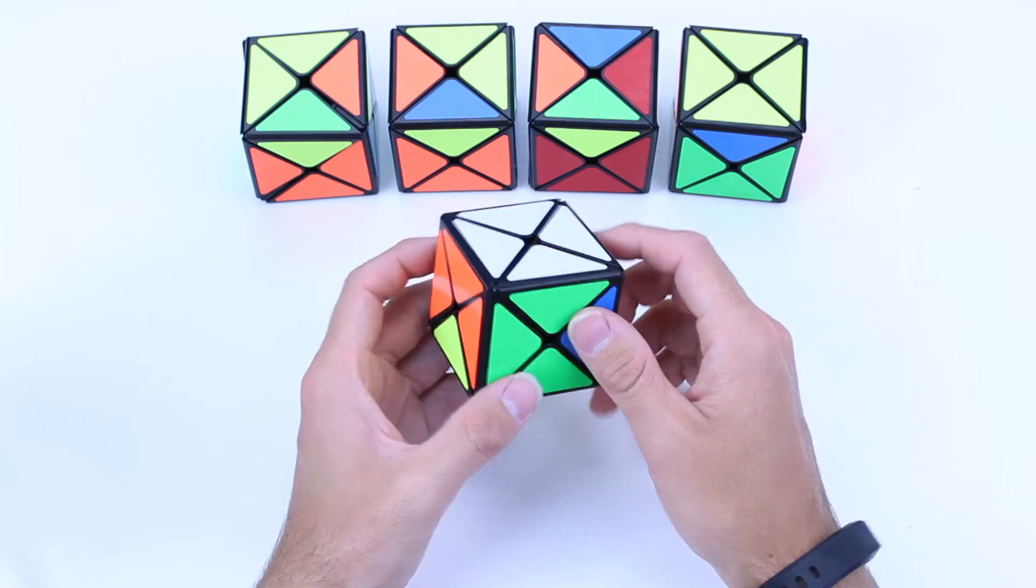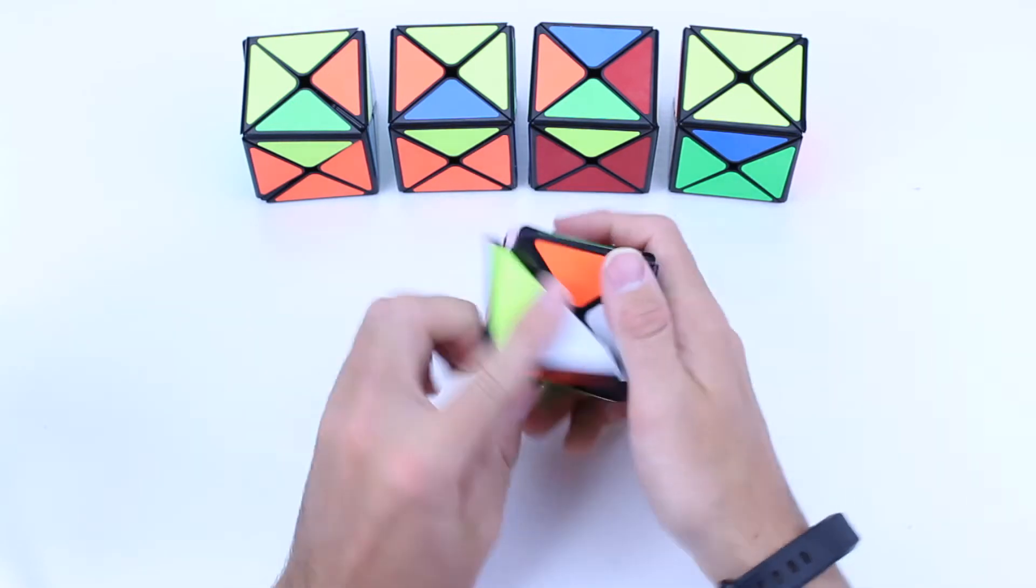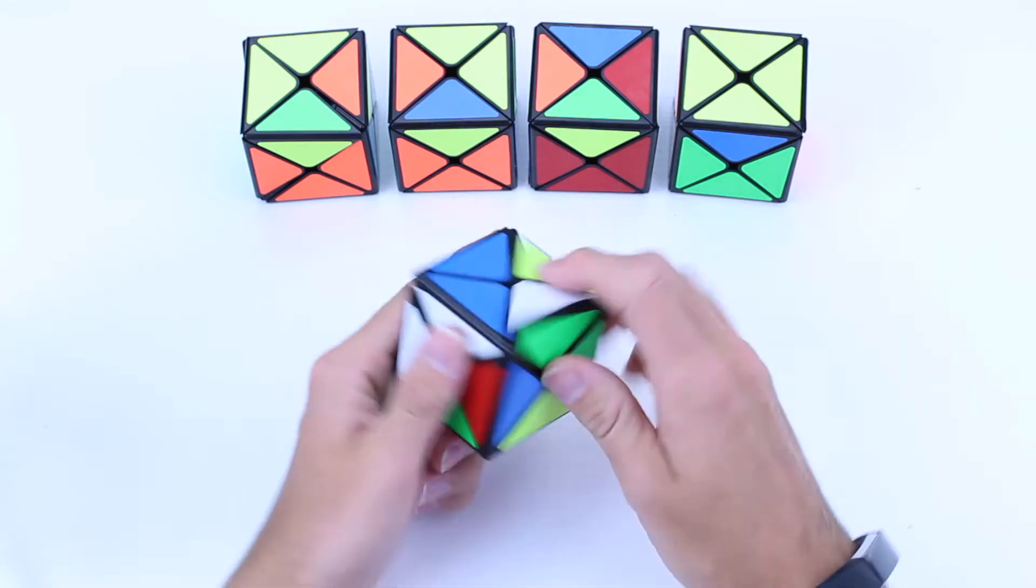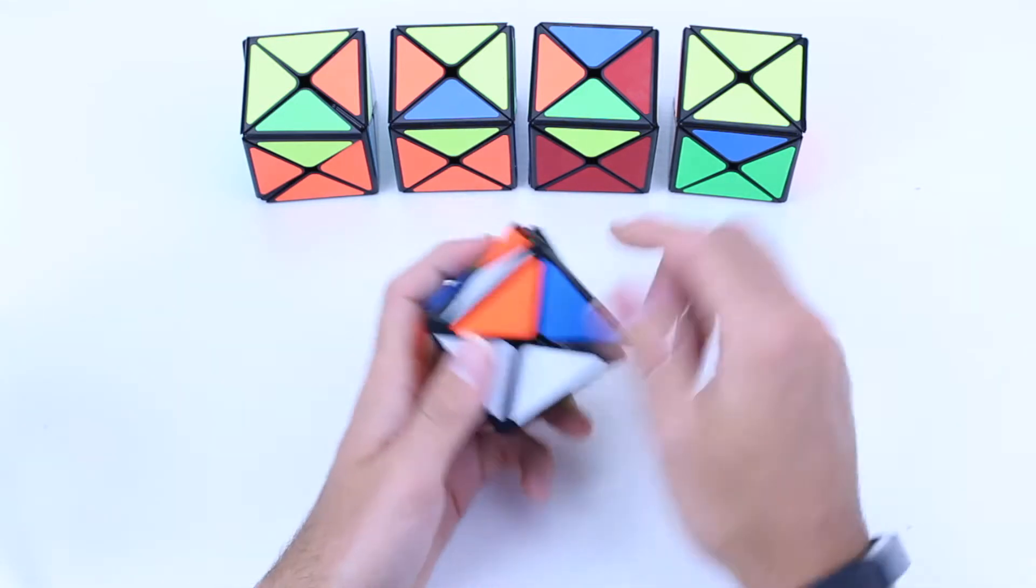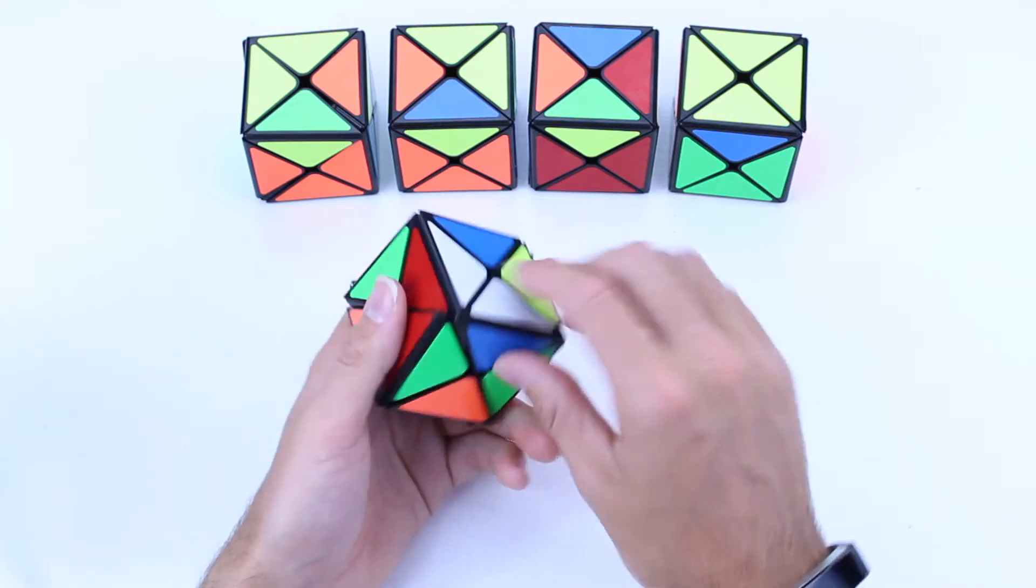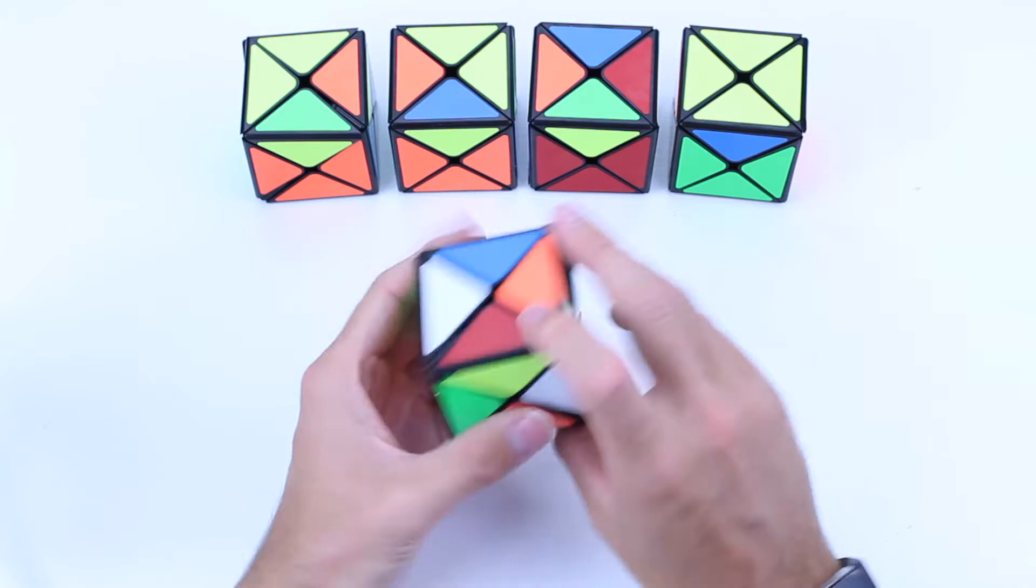Now that's very simple. What I'm going to do guys is just muddle it up one more time and I'll show you again because that was very easy. They were pretty much all grouped together. I actually find it harder to scramble this than I do to solve it, it's crazy.